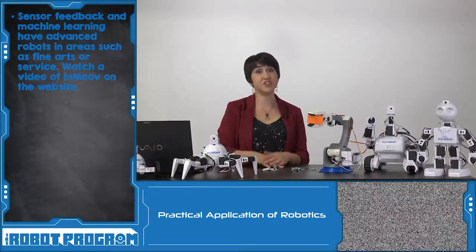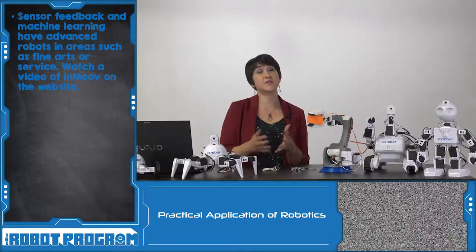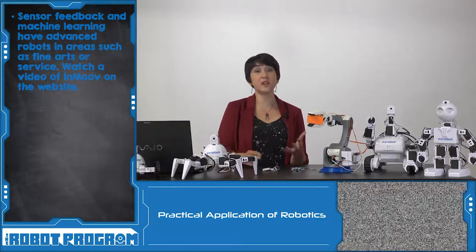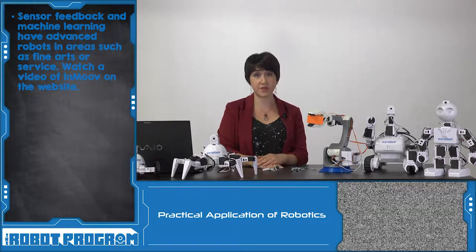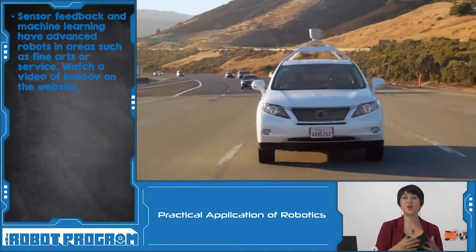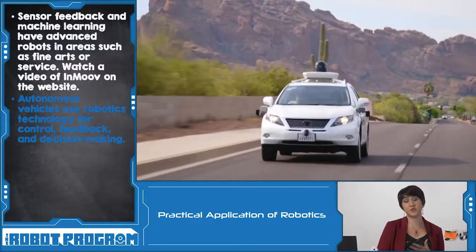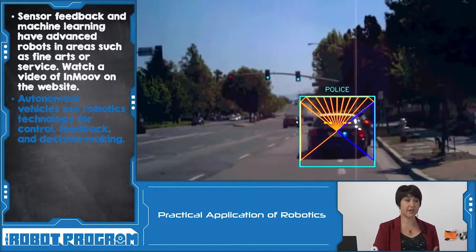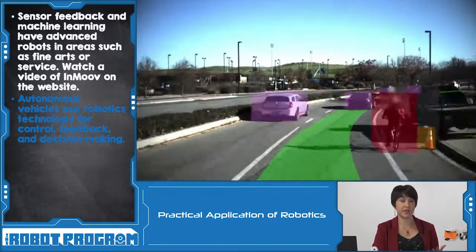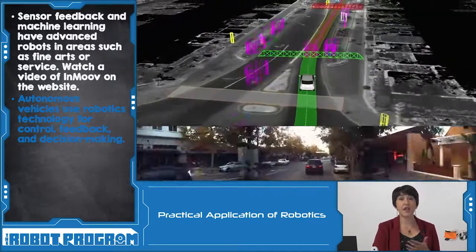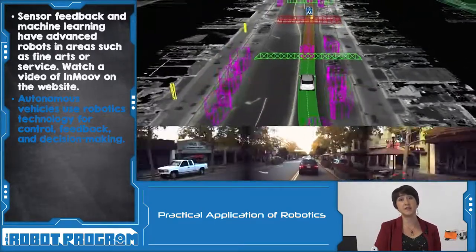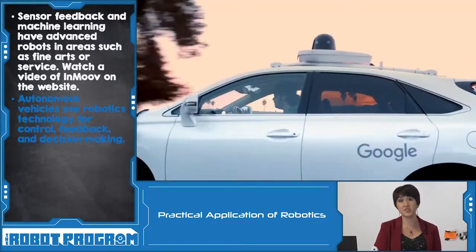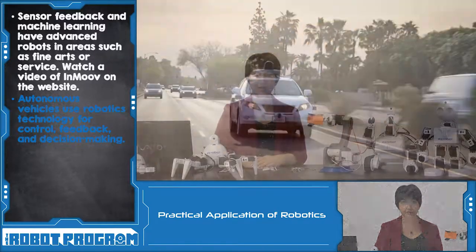Another technology that uses concepts from the field of robotics is autonomous vehicles. If a car is going to drive through a city on its own, it'll need feedback from sensors, it'll need to be monitoring conditions, and it'll also need to be capable of making decisions for itself.